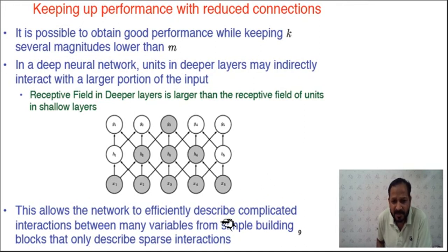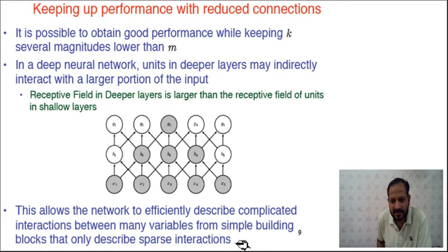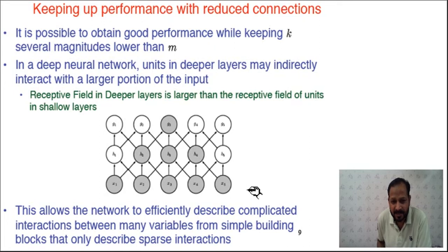This allows the network to efficiently describe complicated interactions between many variables, from simple building blocks that only describe sparse interactions. Though there are very few direct interactions using convolution, it is possible to describe complicated interactions between many inputs indirectly, and because of that its performance remains high.